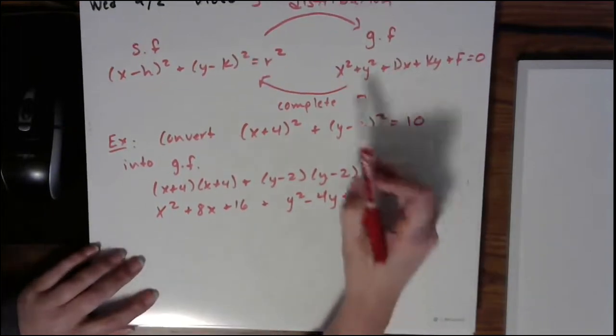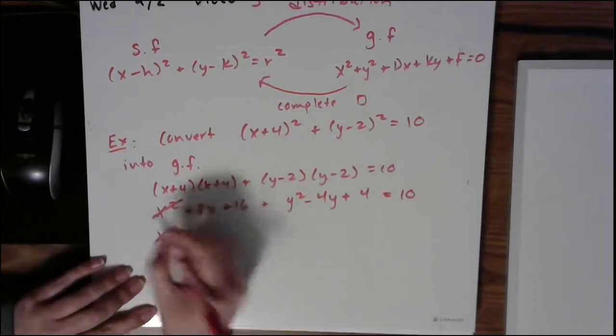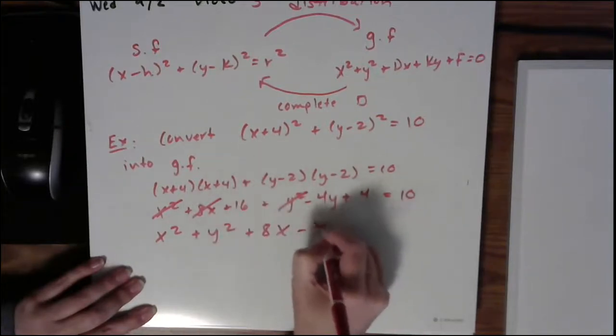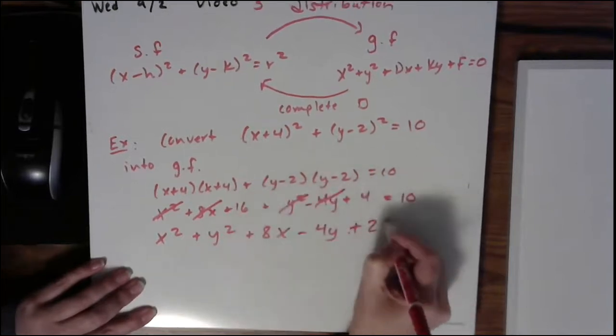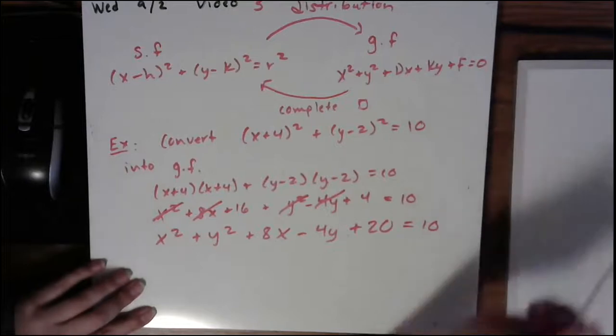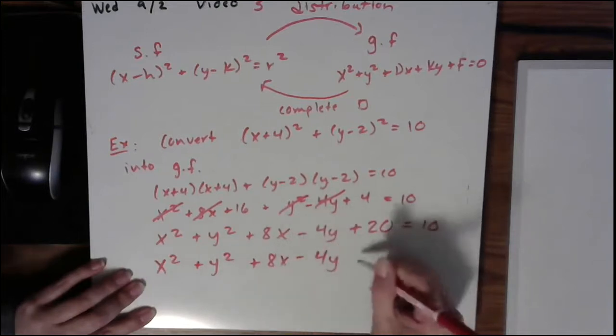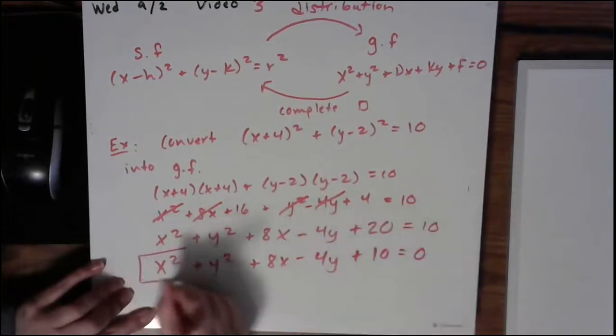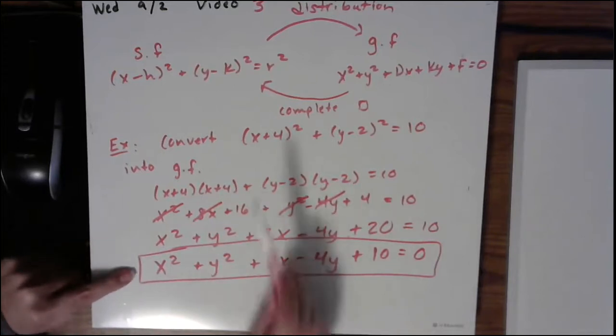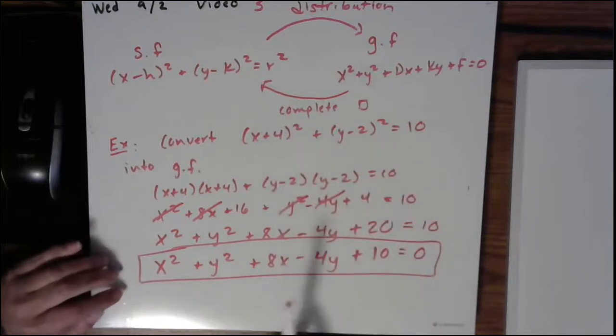Now let's try to get it so it looks exactly like this. So everything on one side, combine any like terms. So x² + y² + 8x - 4y, and then it looks like I have plus 20 equals 10. And then for it to look exactly like this form, let's subtract the 10 to the other side. So I end up with minus 10 would give me 0. And you're done. So remember, this circle looks exactly like the circle from before. They're the same circle, they're just written differently. If you graph them, they will look identical.